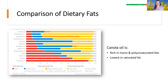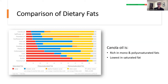Looking at the comparison of dietary fats chart, canola oil is compared to other common cooking oils. Canola oil is rich in mono and polyunsaturated fats — the blue, orange and yellow lines — and lowest in saturated fats — the red line. An interesting science fact: saturated fat is solid at room temperature, whereas polyunsaturated fat is liquid at room temperature. You can tell the saturated fat content of an oil or margarine by how liquid or how soft it is.